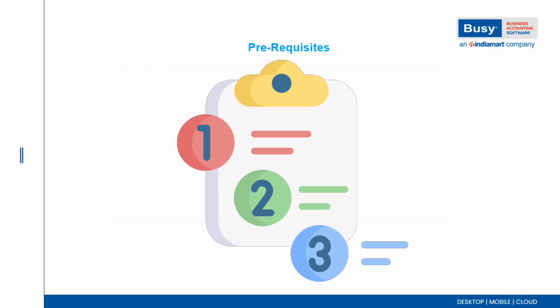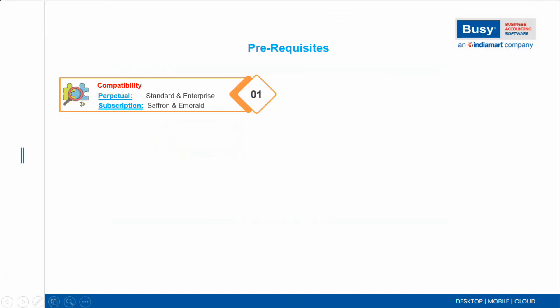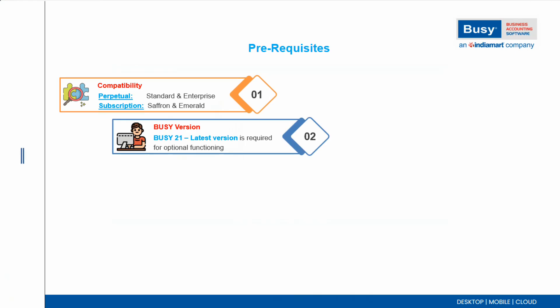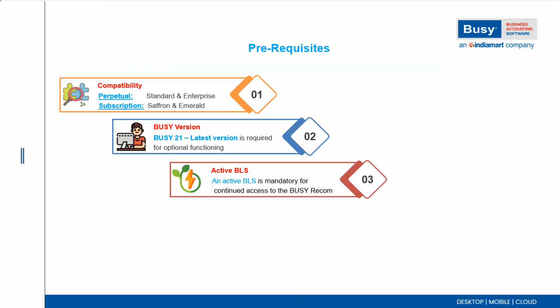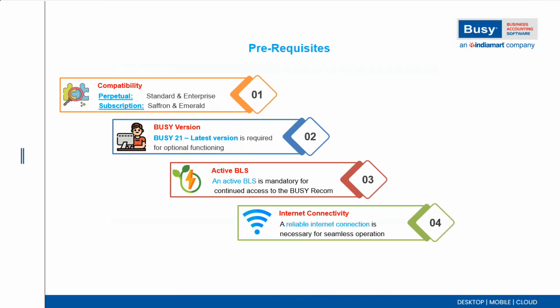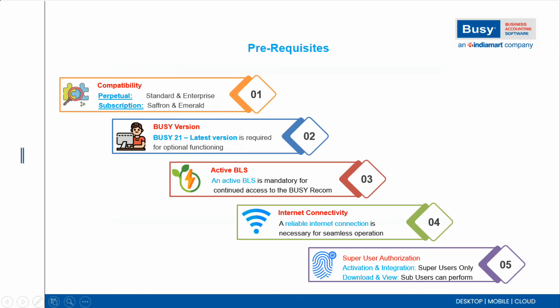Now let's discuss some important points about Busy Recom. First, compatibility: Busy Recom is only compatible with the Standard or Enterprise and Saffron or Emerald models. Second, version: Busy Recom works with Busy 21 latest release version. Third, BLS: it's essential for Busy Recom to have an active BLS to use it. Fourth, internet connectivity: seamless internet connectivity is necessary because you will need internet to download orders and settlements from marketplaces. Last, super user authorization: only the super user can activate and integrate marketplaces in Busy Recom, while sub users can also perform download and reconcile processes.